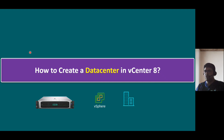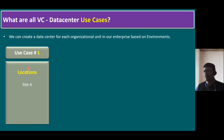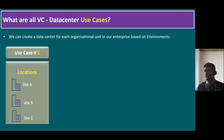Now let's talk about the main use cases in real-time scenarios. When we create a data center for each organizational unit in our enterprise, the naming conventions may vary from one customer to another. Use case one: we can create data centers based on locations — site A, site B, and site C. Instead of DC-01, you can name them by location — for example, Singapore data center, US data center, or India data center. Site A, B, and C are just placeholders; replace them with your actual location names.